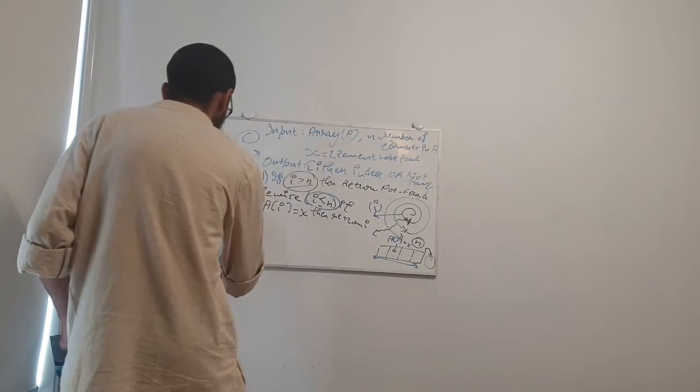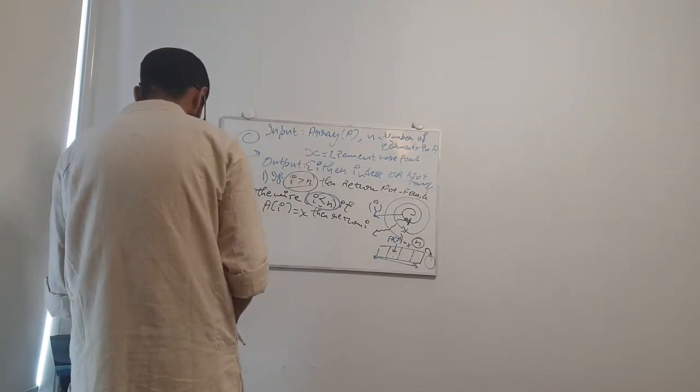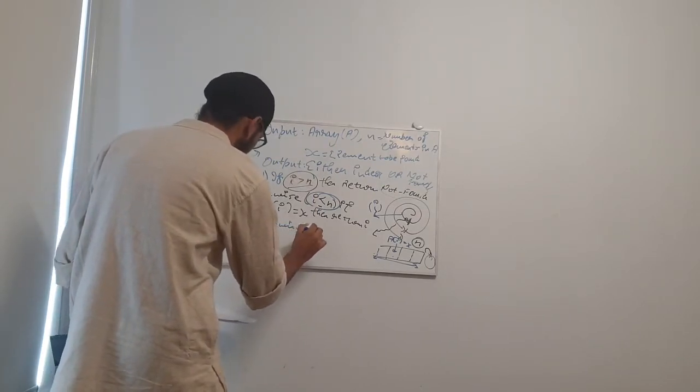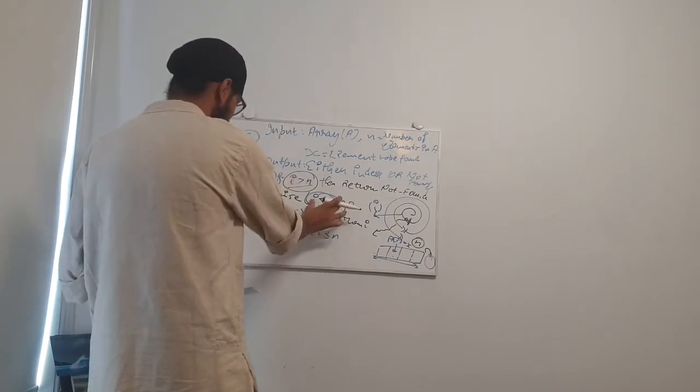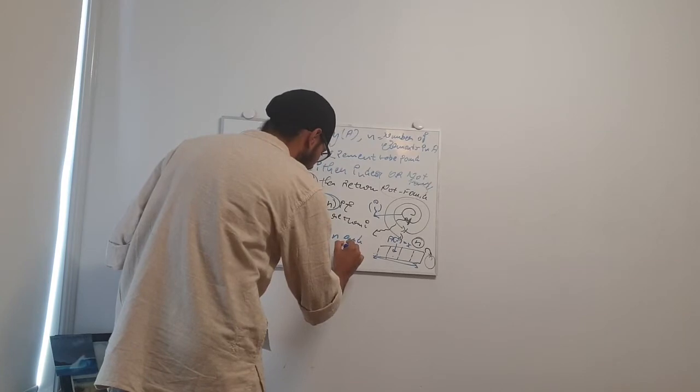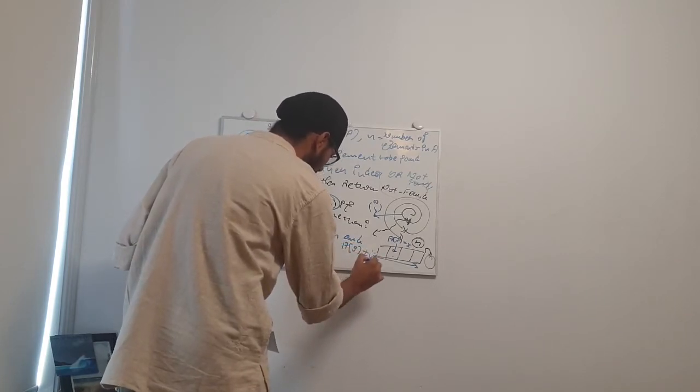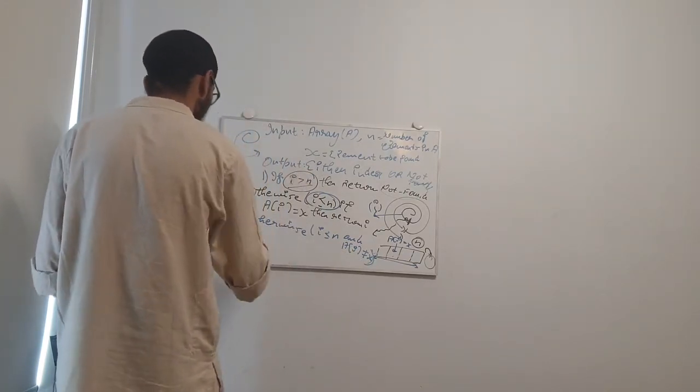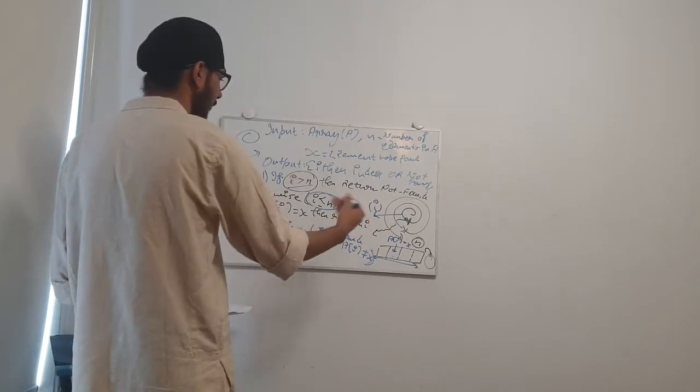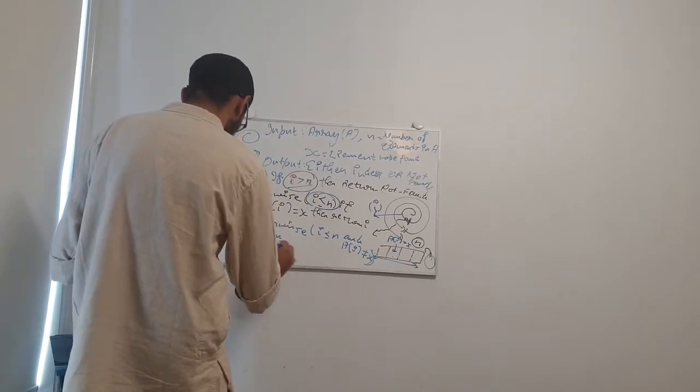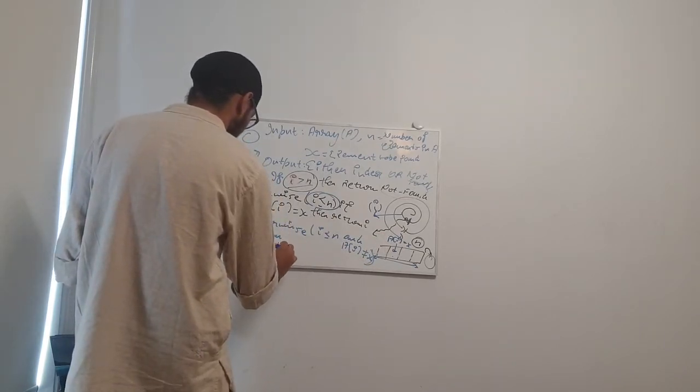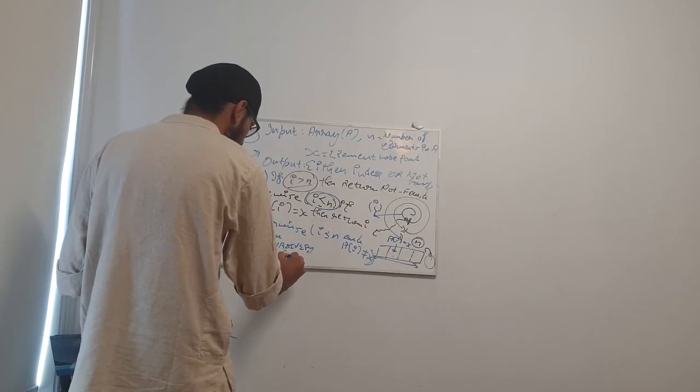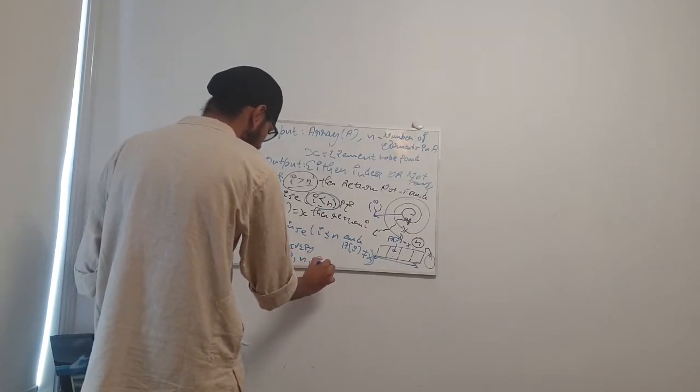Third step: otherwise, if I is less than or equal to N, we have already done this check. If A of I is not equal to the value that I am looking for, what I will do? I will return because I need to get out of this loop and create a new loop. Recursively do the same algorithm but with the inputs array and I plus one and X.